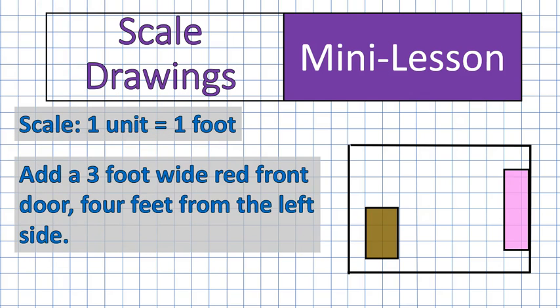And now I'm going to add a three foot wide red front door, four feet from the left side. This has got a lot of instruction on it. We want the door to be three feet wide. We want it to be red. And then we want it to begin four feet from the left side of this room. So it will look like that. There's our three foot door. Notice it's three feet in measurement, and it is four feet from the left side of this room. And there you go. A scale drawing of a room that has a two by three table, a one and a half by five couch, and a three foot front door.